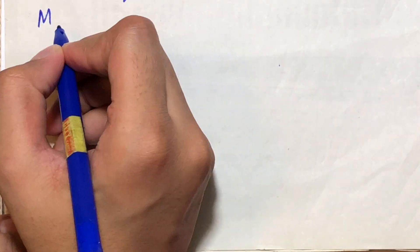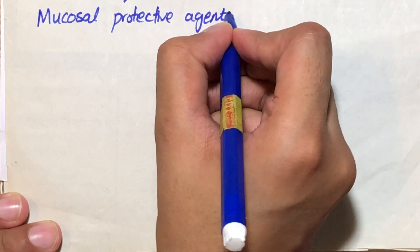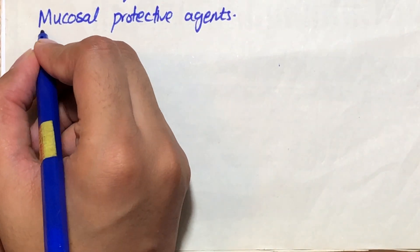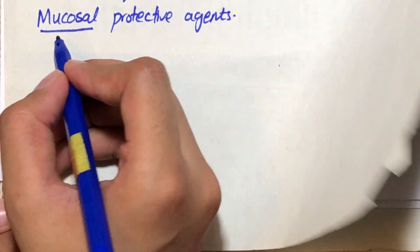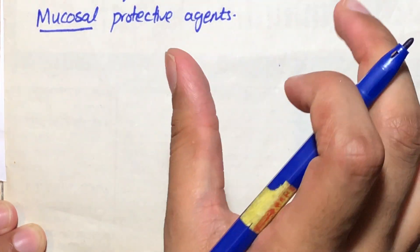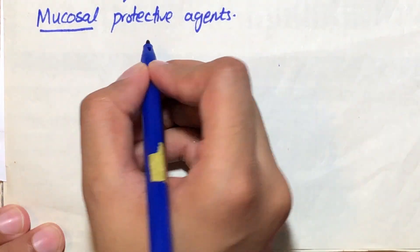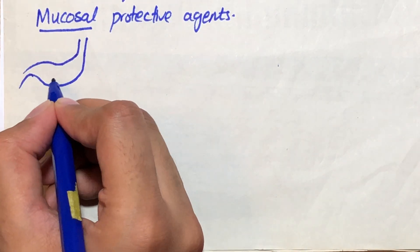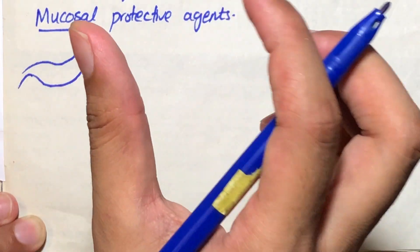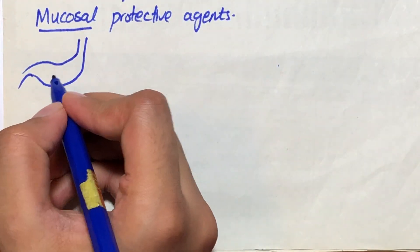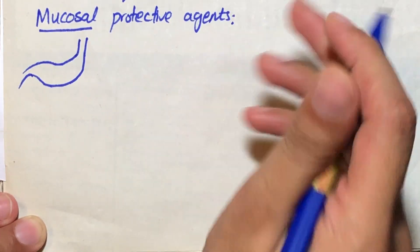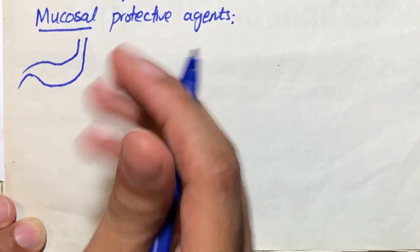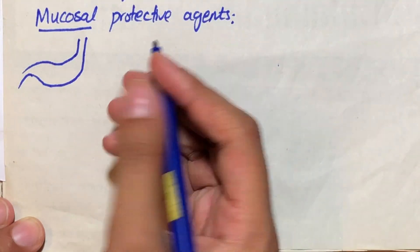In today's video we will be learning about mucosal protective agents. As the name indicates, mucosa is the innermost layer of the stomach — the layer surrounding the lumen. What these agents do is protect ulcers which are being formed in the mucosal lining of the stomach so that they could heal themselves.